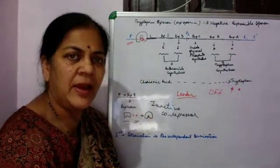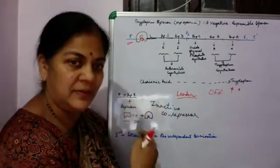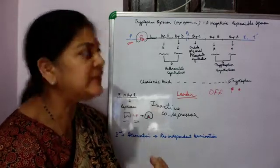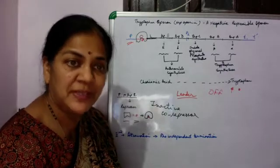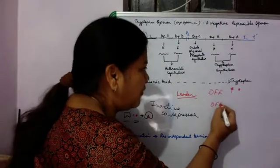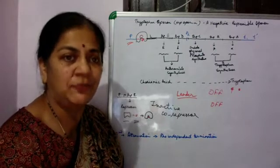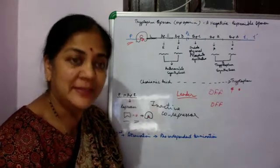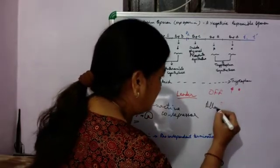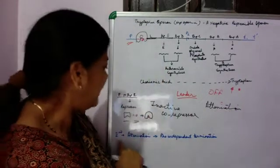However, it was observed that even when the repressor regulatory gene was mutated and repressors were not formed, if there were sufficient levels of tryptophan in the medium, the trp operon was still off. This led to the hypothesis that there is probably another level of regulation, and it was found that yes, there is another level — called attenuation.